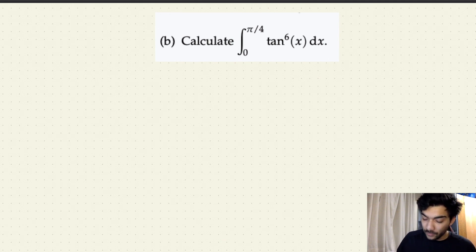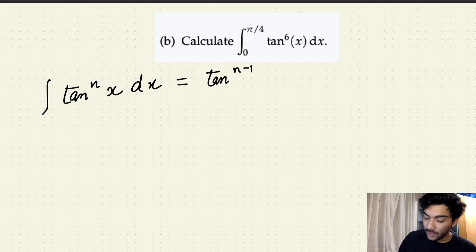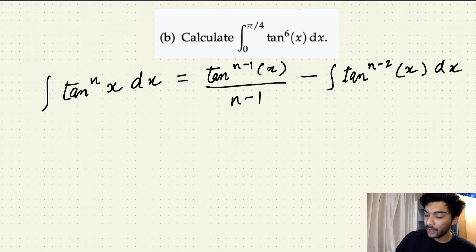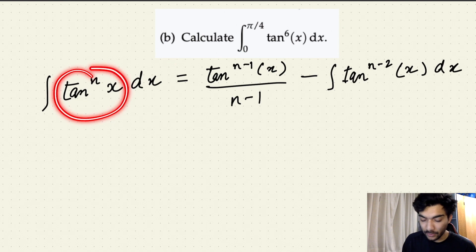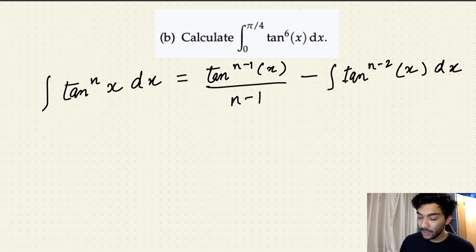Since we proved in the last video by substitution that if we have to calculate or simplify the integral of tan to the power nx dx, the formula is basically tan to the power n minus 1 of x upon n minus 1, minus the integral of tan to the power n minus 2 of x dx. And the reason why it's simpler is because now you have reduced your tan to the power nx to simply calculating the integral of tan to the power n minus 2 of x dx. And again, if you want to solve for this indefinite integral, you can use the same reduction formula.